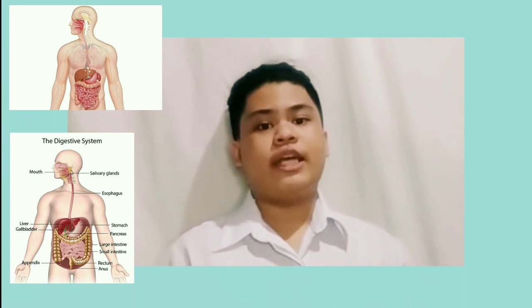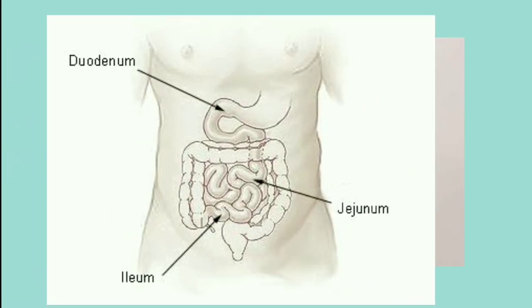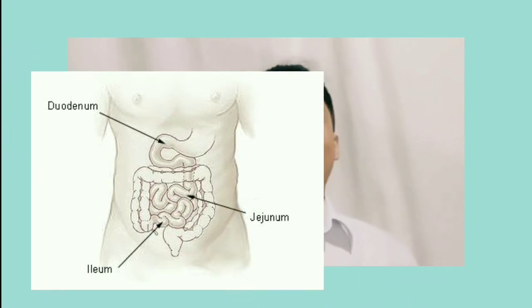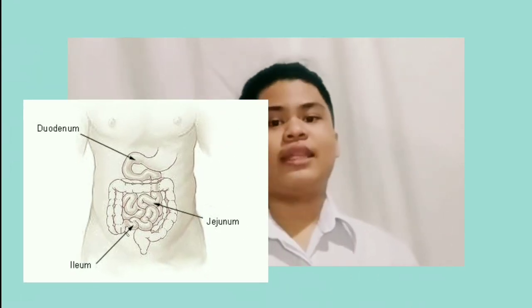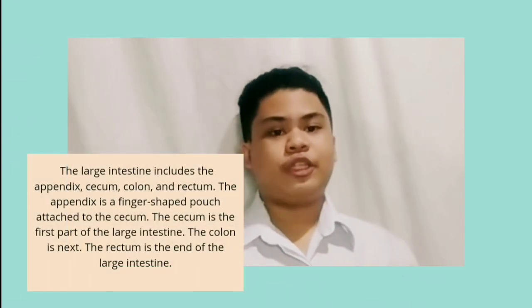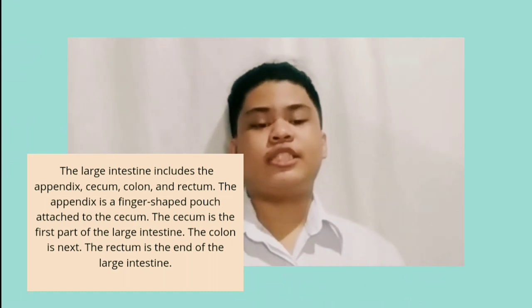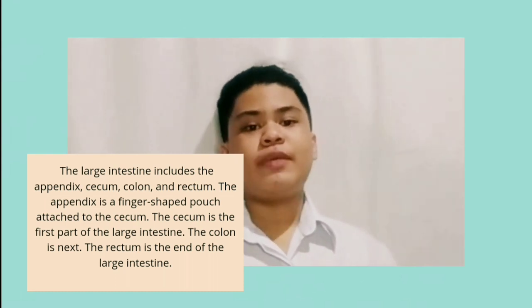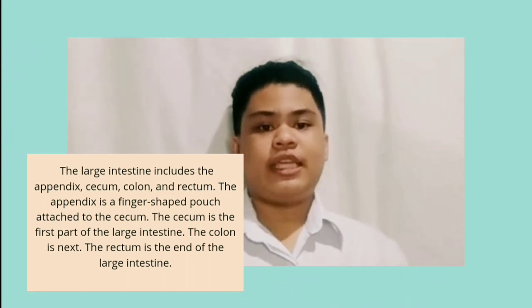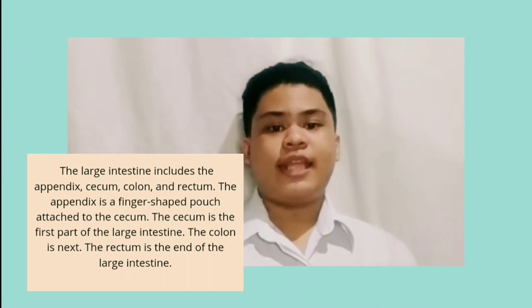The liver, pancreas, and gallbladder are solid organs of the digestive system. The small intestine has three parts: the first part is called the duodenum, the middle part is the jejunum, and the ileum is at the end. The large intestine includes the appendix, cecum, colon, and rectum. The appendix is a finger-shaped pouch attached to the cecum, which is the first part of the large intestine.